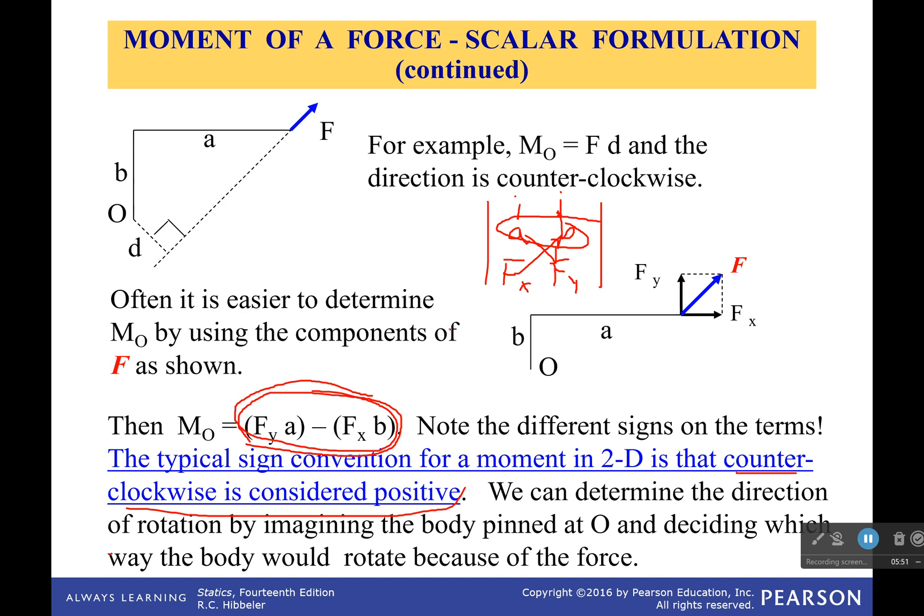For now, though, just remember, moment of a force, break up each of them into components, and then multiply the opposite components together. So the y of the force times the x distance, the x force times the y distance, and then subtract them. And this will give you whatever the moment is in the counterclockwise direction. So if it's negative in the end, that means it's actually turning clockwise.